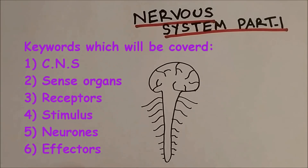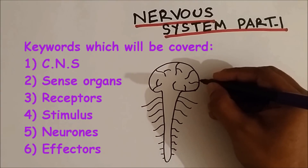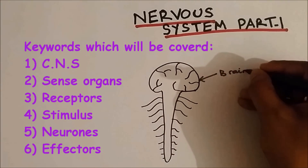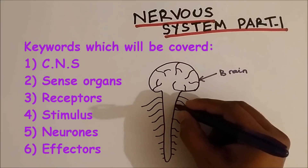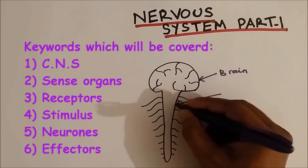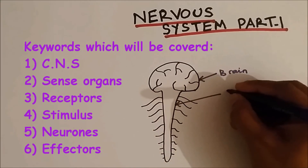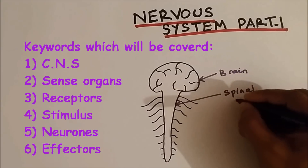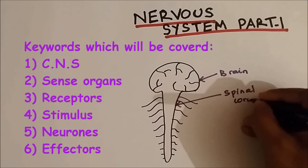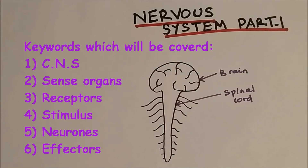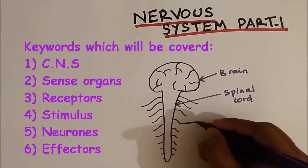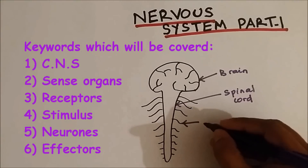In this diagram you can see the brain. The brain is connected to the spinal cord, and the branches that you see connected with the spinal cord are called nerves.